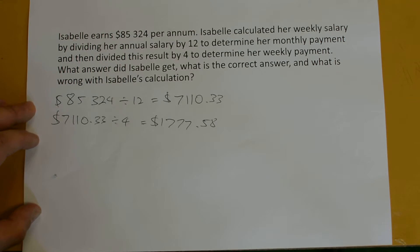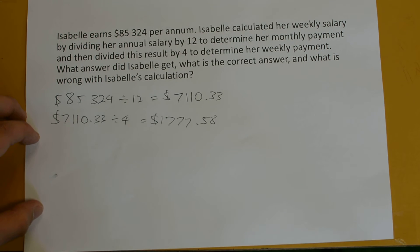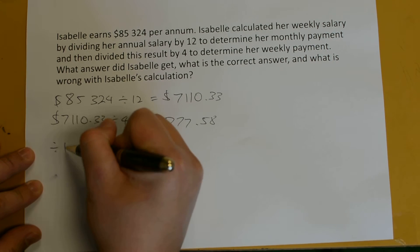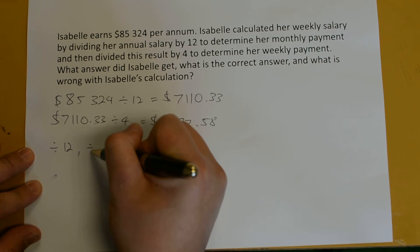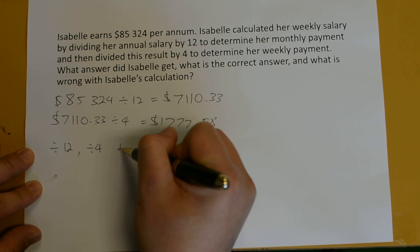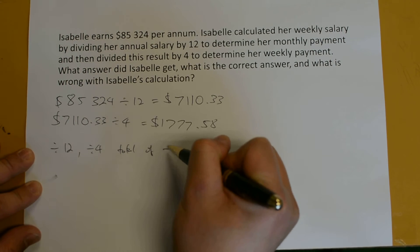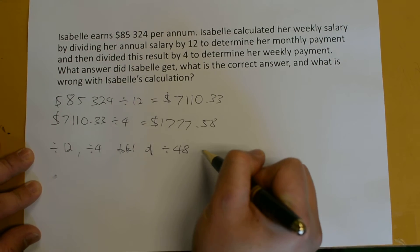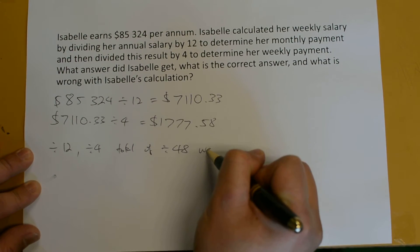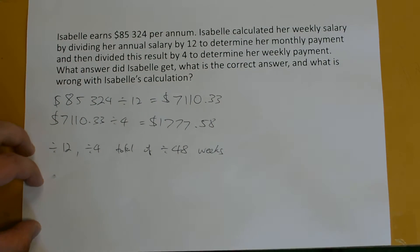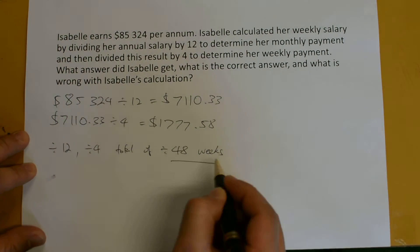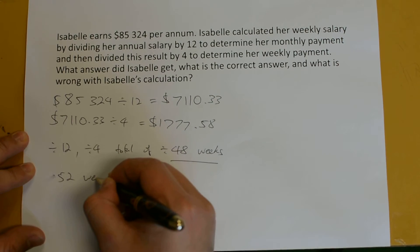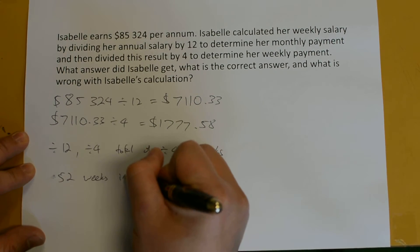What is wrong with this answer and what is Isabel's incorrect calculation? First of all, she divided by 12, then by 4, which gives a total of dividing by 48 to get the weekly payment. This is incorrect because there should be 52 weeks in a year.